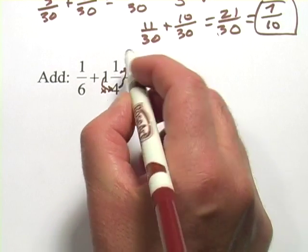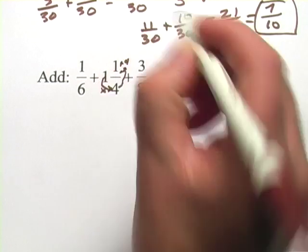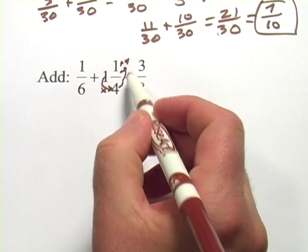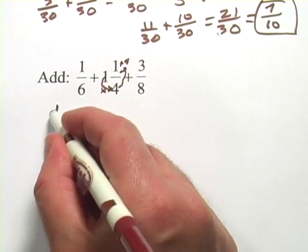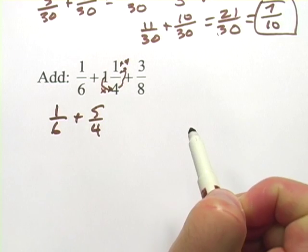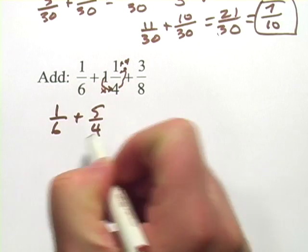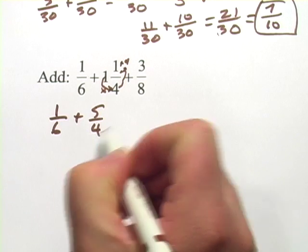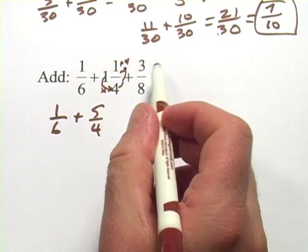And then you add that to the top. So plus 4. And I get 1 and 1 fourth is 5 fourths. So this is really 1 sixth plus 5 fourths. And I'm going to leave that 3 eighths off for a minute. I'm going to make common denominators on these two first. And then I'll try to add that third one in.